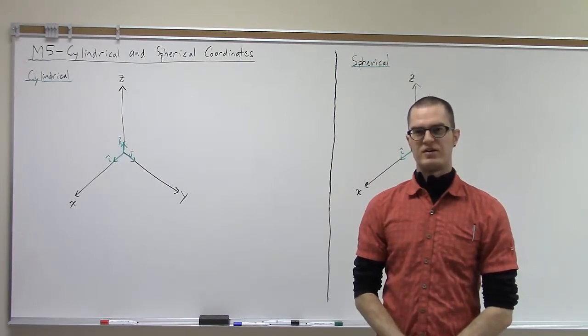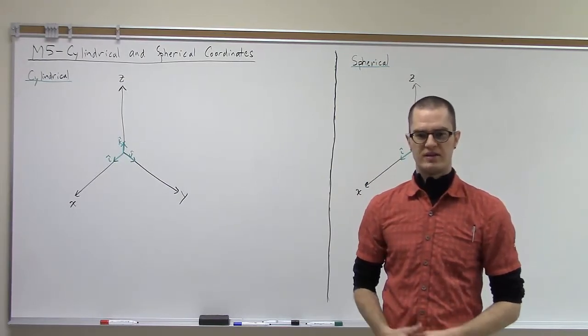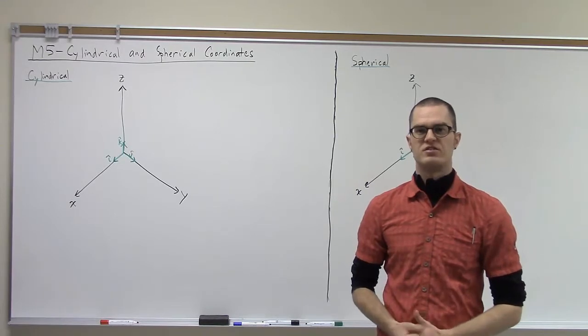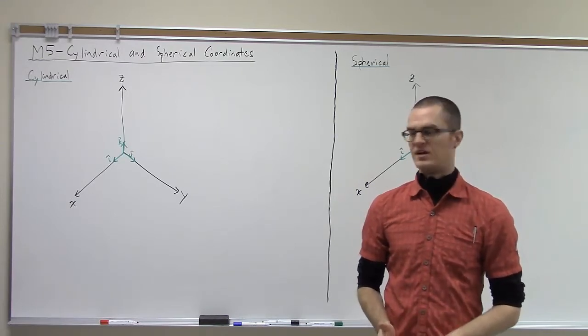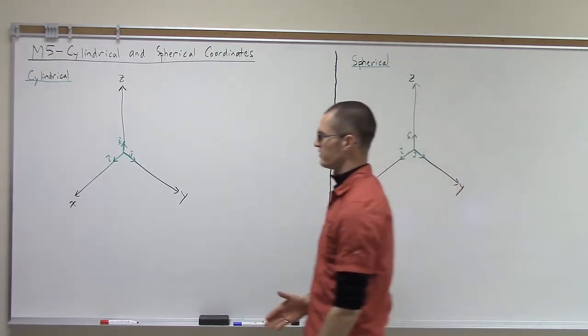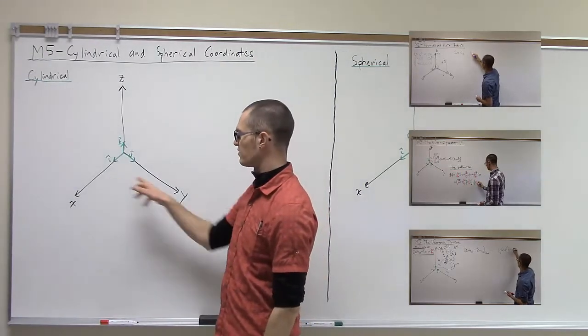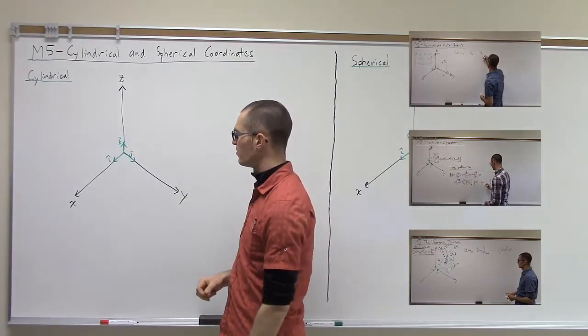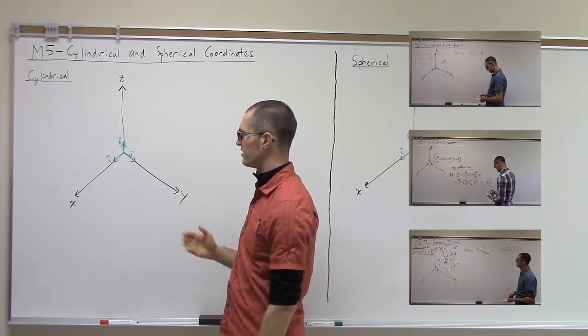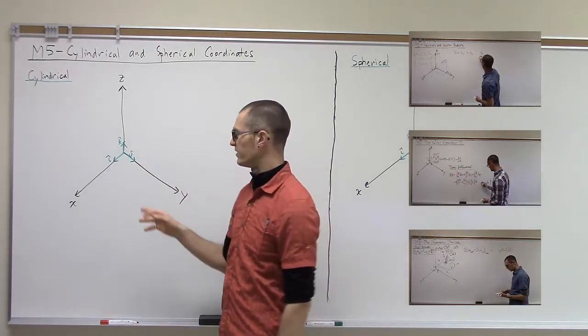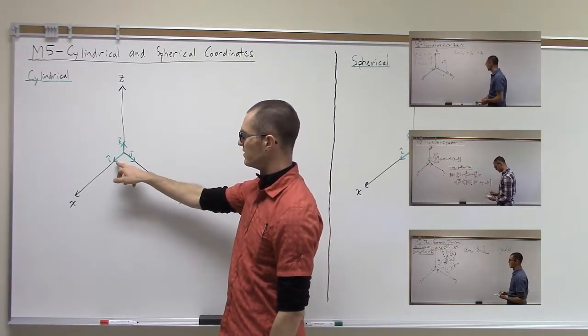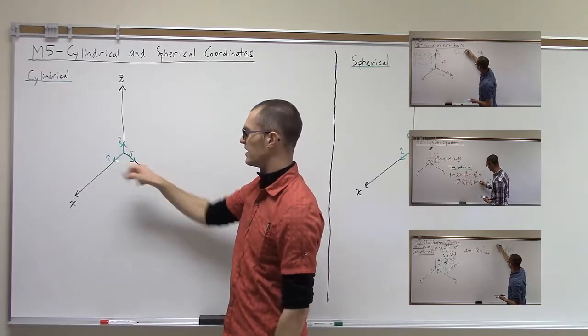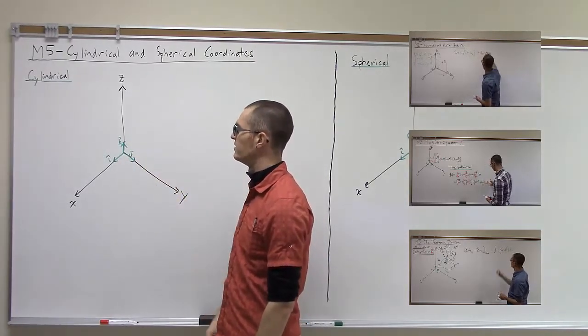Up to this point, we've been looking at coordinate systems only in the rectangular Cartesian coordinate system, which is to say that we had our vectors defined in terms of an x-coordinate, a y-coordinate, and a z-coordinate, and we built the vector out of a sum of scalar coefficients multiplied by these constant unit vectors i, j, and k. They just point down each of the axes.